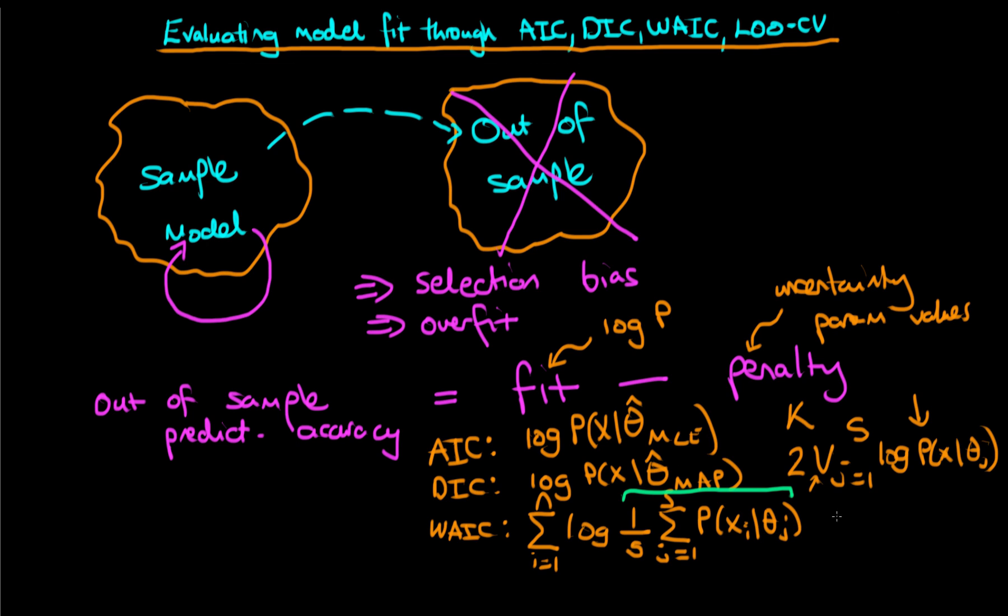The correction term is similar to that of DIC, except now what we do is we evaluate it point-wise. So we sum from i equals 1 to n of the variance across all of our posterior draws of the log of the probability of Xi conditional on theta J.